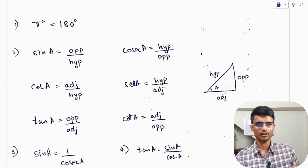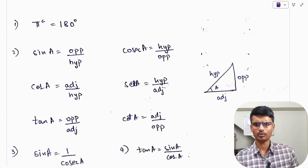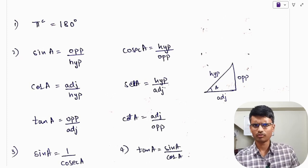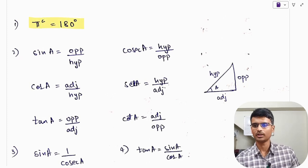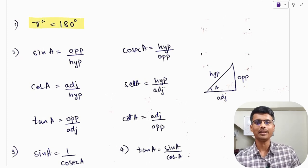Let us start today's video from very basic. First, as you may remember, we studied the relationship between radians and degrees. Always remember: pi radians is equal to 180 degrees. This is the important relation.